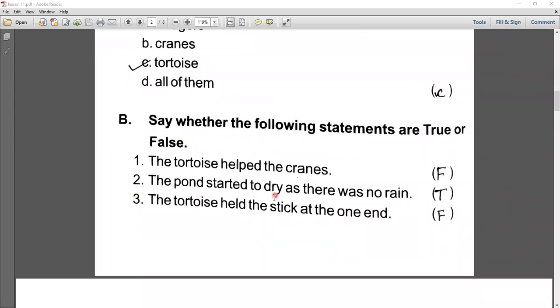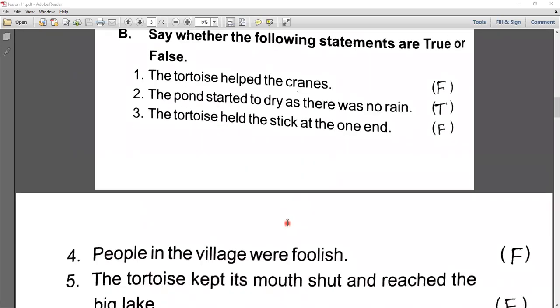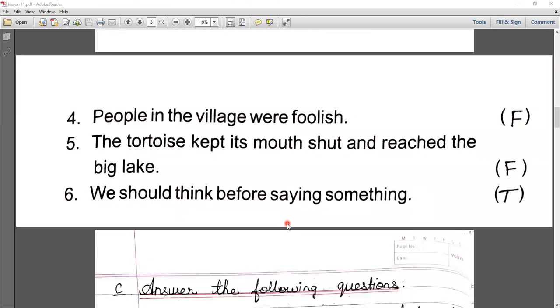Number second, the pond started to dry as there was no rain. Yes, it is true. Number third, the tortoise held the stick at the one end. Are no, it is false. Number four, people in the village were foolish. Yes, false.